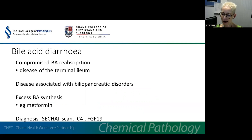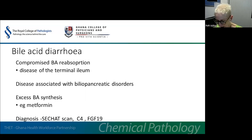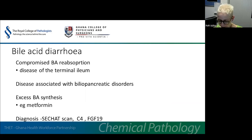Bile acid malabsorption is increasingly recognised as a cause of diarrhoea. This may occur where there's compromised bile acid reabsorption, for example in disease of the terminal ileum, or where there's disease associated with biliopancreatic disorders, or where there's excess bile acid synthesis — one example being association with metformin. The gold standard test for the diagnosis of bile acid diarrhoea is the SeHCAT scan, an imaging investigation involving selenium-labelled homocholic acid taurine. Other tests involve measurement of faecal bile acids or serum markers such as C4 (7-alpha-hydroxy-4-cholestene-3-one) or fibroblast growth factor 19, but none are particularly widely available at present.